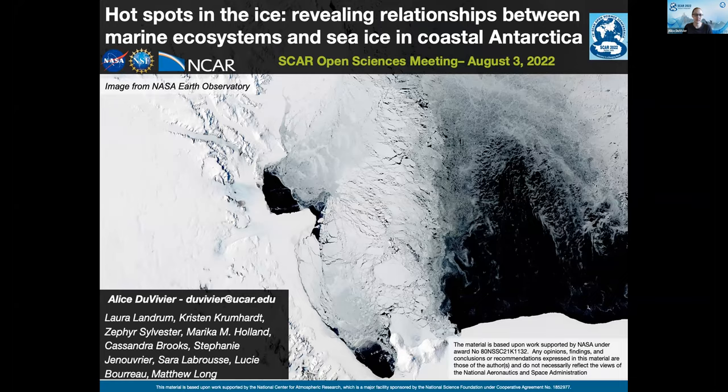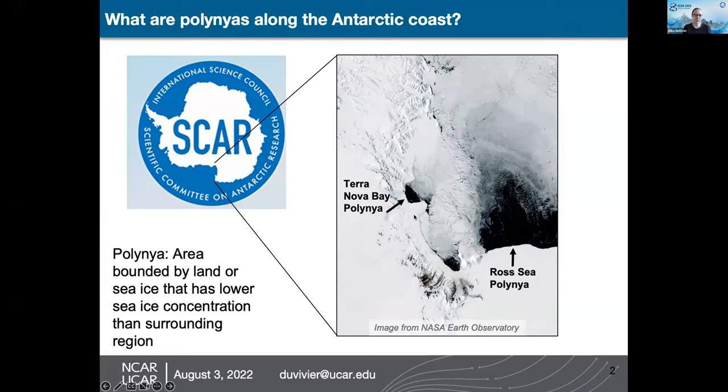What are polynias along the Antarctic coast? Let's zoom into the Ross Sea region. On this satellite image, the areas in black are what we call polynias — areas of generally lower sea ice concentration surrounded by sea ice or a combination of sea ice and land. There's a relatively small polynia, the Terra Nova Bay polynia, and a larger one, the Ross Sea polynia, which frequently occurs in this region every year.